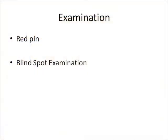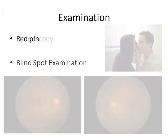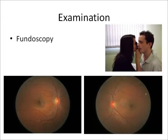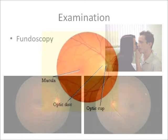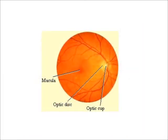A red pen and blind spot examination can also be performed, and then fundoscopy can also be performed. This is done to look for a normal optic cup, an optic disc, and a macula and normal vessels, as well as checking for any evidence of retinal haemorrhages or vitreous tears.